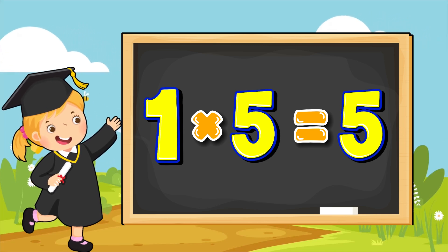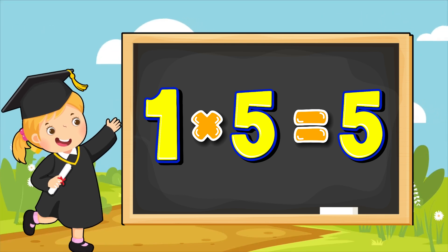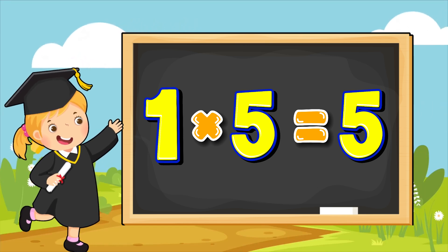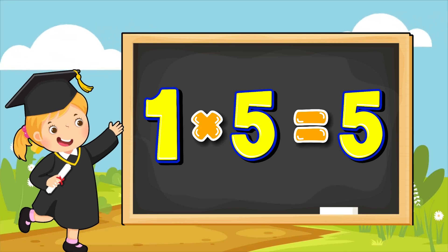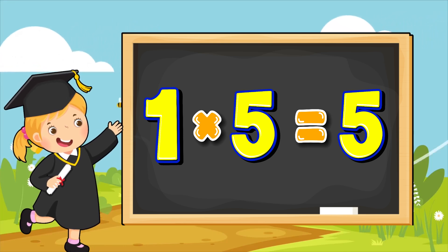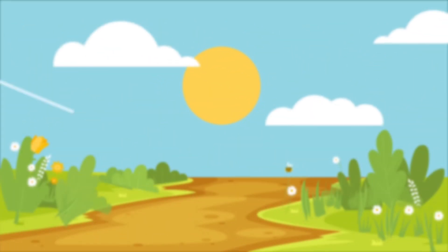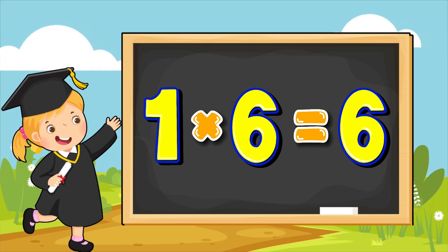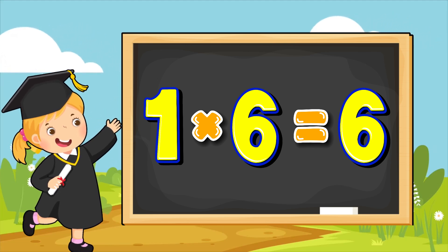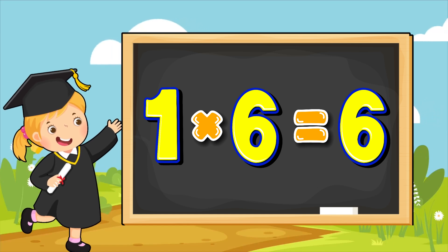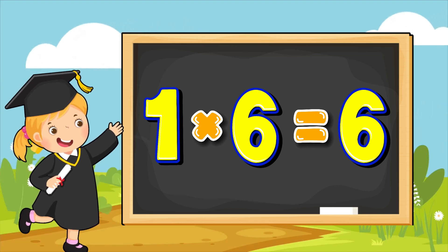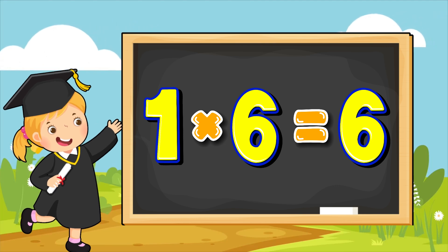One multiplied by five equals to five. Say it loud. One multiplied by five equals to five. One multiplied by six equals to six. Stay focused. One multiplied by six equals to six.